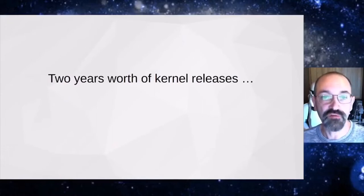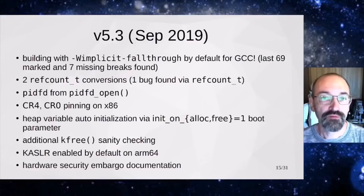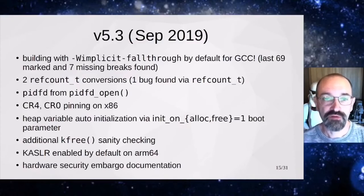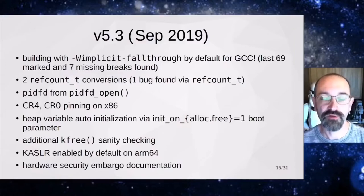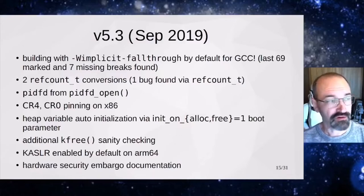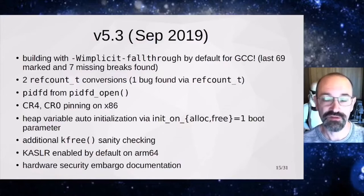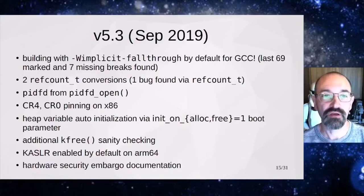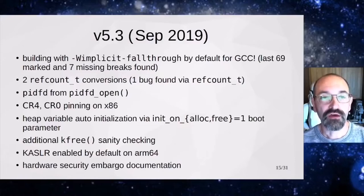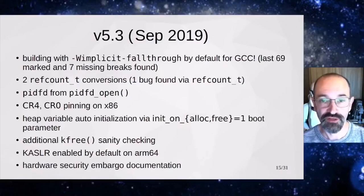Here is two years worth of kernel releases. In September 2019, we saw the release of 5.3. This was the end of the implicit fall-through work — removing that whole class of vulnerability where switch statements in C have no semantic marking for whether you intended to fall through. Roughly one in ten cases were a legitimate bug, so it was worth going through and fixing all of them and then turning on the warning so we'd never see that flaw again.